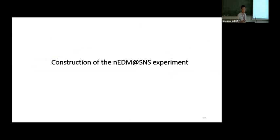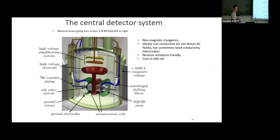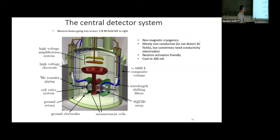With about three minutes left, I'll go through some hardware. The technical challenges in the central detector system include needing very non-magnetic materials — even stainless steel is too magnetic for us — so we use a lot of plastics and composite materials. Materials must also be non-electrically conductive, otherwise they interfere with our AC fields. For the electrodes, as hinted earlier, they require special treatment.